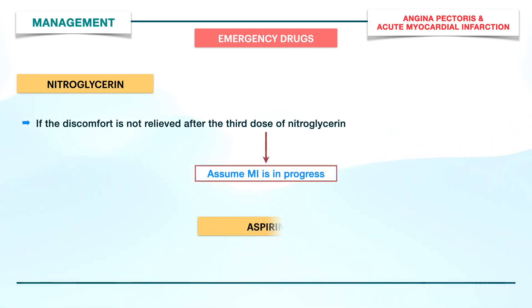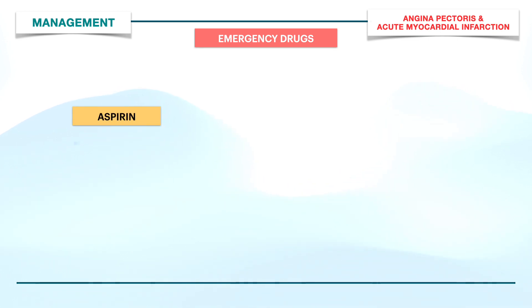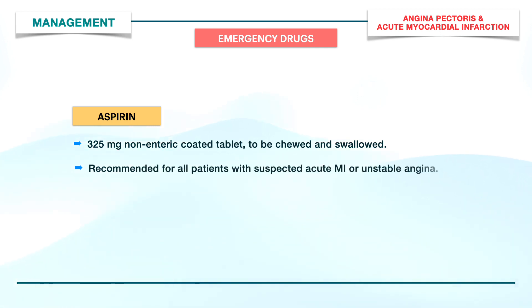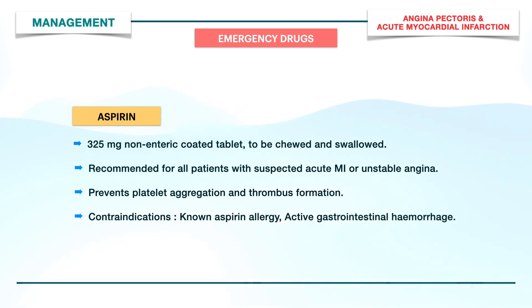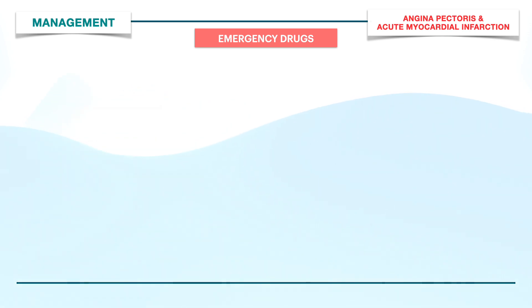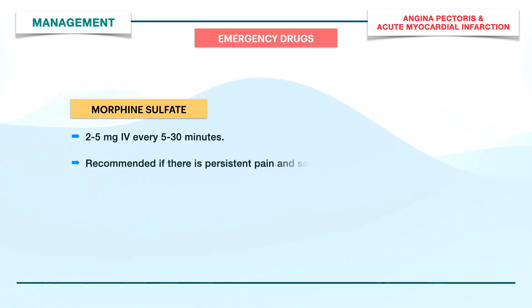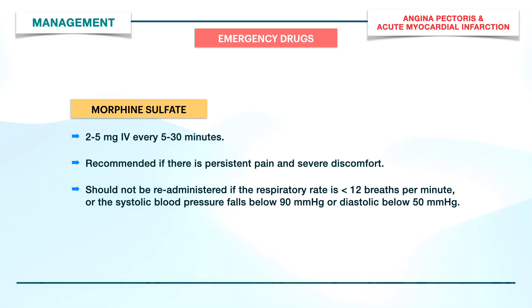In case of MI, other emergency drugs such as aspirin and morphine are recommended. An IV line with a crystalloid solution such as 5% dextrose at 30 ml per hour should be started. 325 mg non-enteric coated aspirin tablets are recommended to be chewed and swallowed. Aspirin is indicated for all patients with suspected acute MI or unstable angina, as it prevents platelet aggregation and thrombus formation, and is contraindicated in known aspirin allergy or active gastrointestinal hemorrhage. Morphine sulfate is given 2–5 mg IV every 5–30 minutes for persistent pain and severe discomfort. It should not be re-administered if the respiratory rate is less than 2 breaths per minute, or systolic blood pressure falls below 90 mmHg, or diastolic below 50 mmHg.